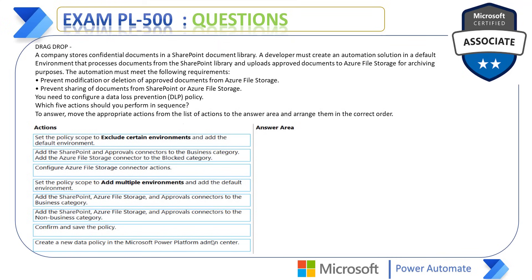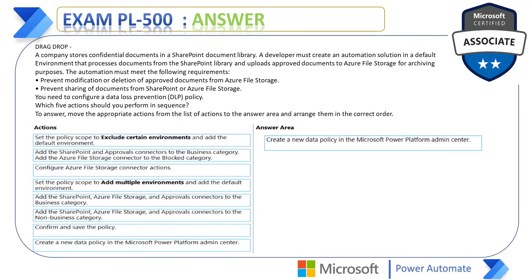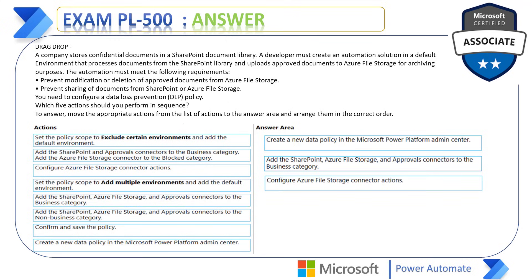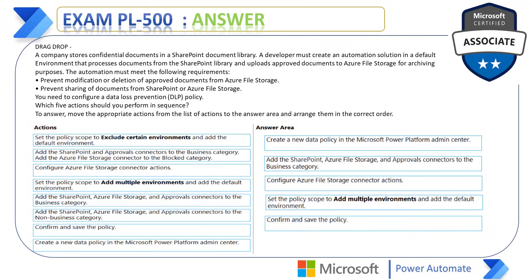Out of these eight actions we need five in sequence. The correct answer is: First, create a new data policy in the Microsoft Power Platform Admin Center. Second, add the SharePoint, Azure File Storage, and Approval connectors to the Business category. Third, configure Azure File Storage connector actions. Fourth, set the policy scope to Add Multiple Environments and add the default environment. Fifth, confirm and save the policy. I hope you understand how to create a DLP policy and configure connector actions.